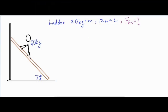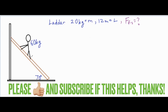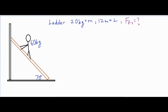In this video we're going to be taking a look at the classic ladder problem, where a person is climbing on a ladder that's experiencing forces and torques, and we're going to solve for the force of static friction acting on the ladder. The first thing we're going to do is draw our forces acting on the ladder. We have a force of gravity acting on the ladder right at the center of its mass, and we'll call that mg.